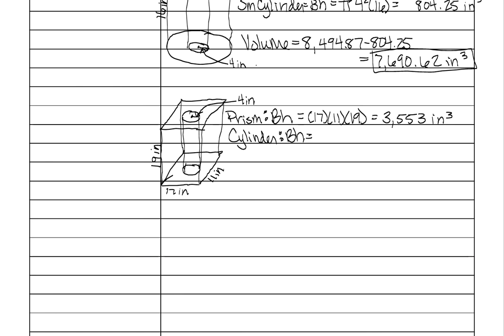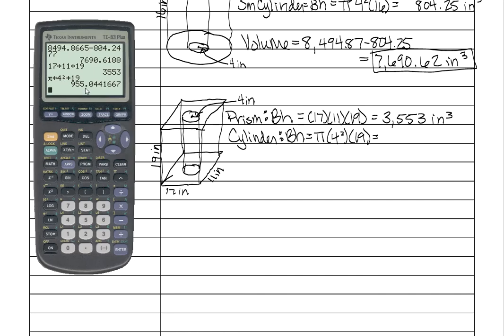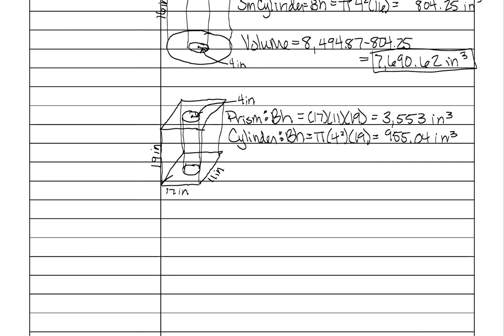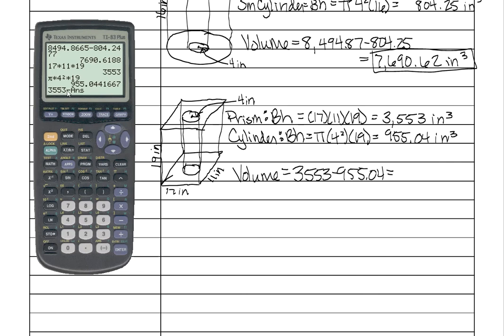Now find the volume of the cylinder: area of the base times the height. The base is a circle, pi r squared. So pi times the radius of 4 squared times the height of 19. That gives 955.04 cubic inches. Subtract the two to find the space left between the cylinder and the prism: 3,553 minus your previous answer. You can press second and the ANS button to re-enter your previous answer. The result is 2,597.96 cubic inches.